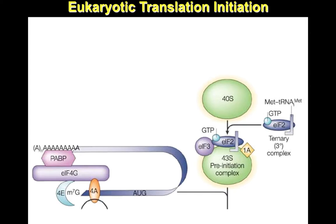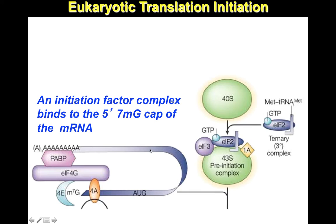Eukaryotic translation initiation is a little more complicated than prokaryotic translation. We start out by making two separate complexes — one with the messenger RNA and one with the small ribosomal subunit. The first thing to happen is that an initiation factor complex binds to the 5' 7-methylguanosine cap of the messenger RNA. Here is the 7-methylguanosine cap, and you can see that EIF4G, 4E, and 4A are bound to this position on the messenger RNA. EIF4G actually binds to poly-A binding protein, which is attached to the poly-A tail. This ensures that messenger RNAs damaged by removal of their poly-A tail or coding region are not translated — only intact messenger RNAs will be loaded onto ribosomes.